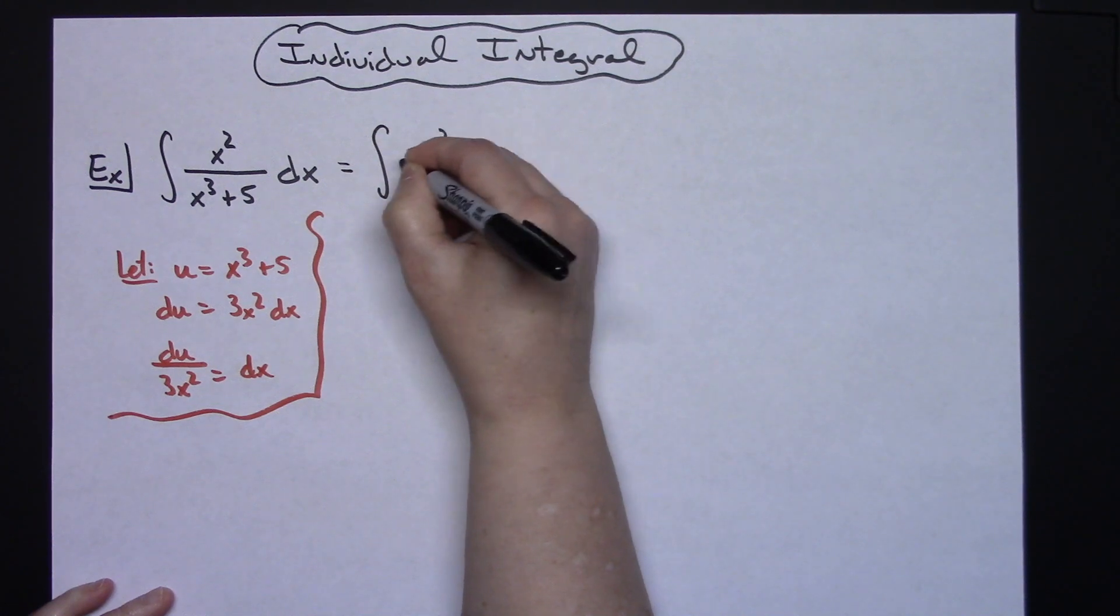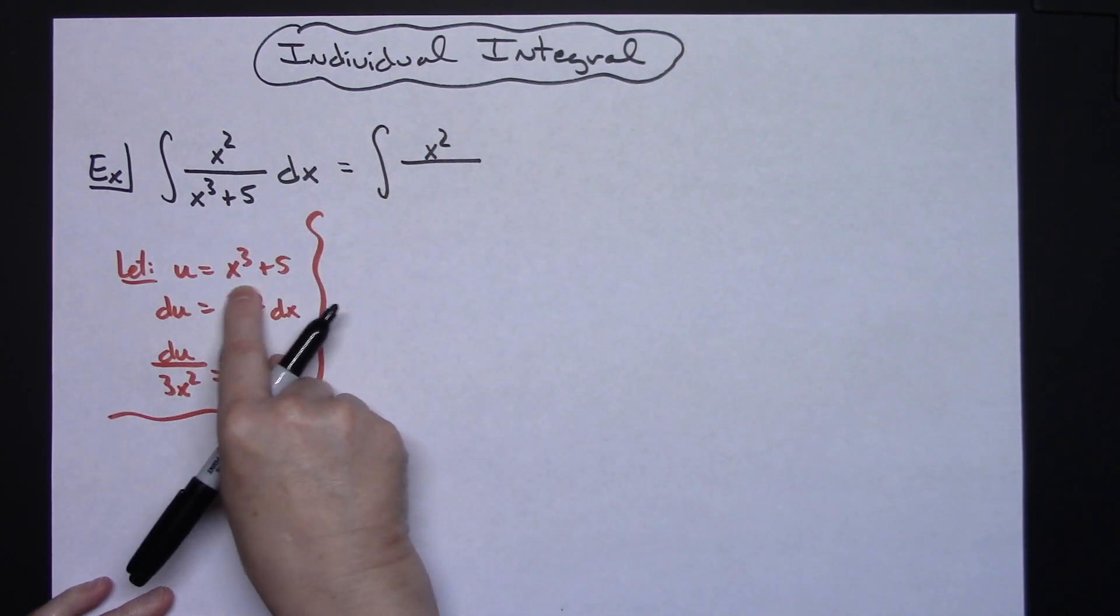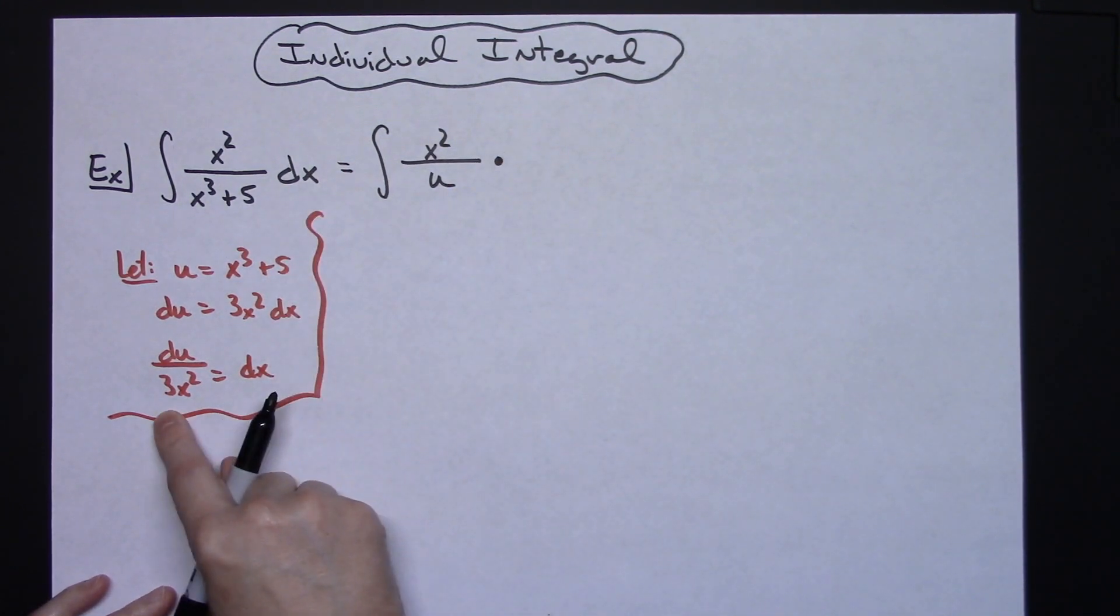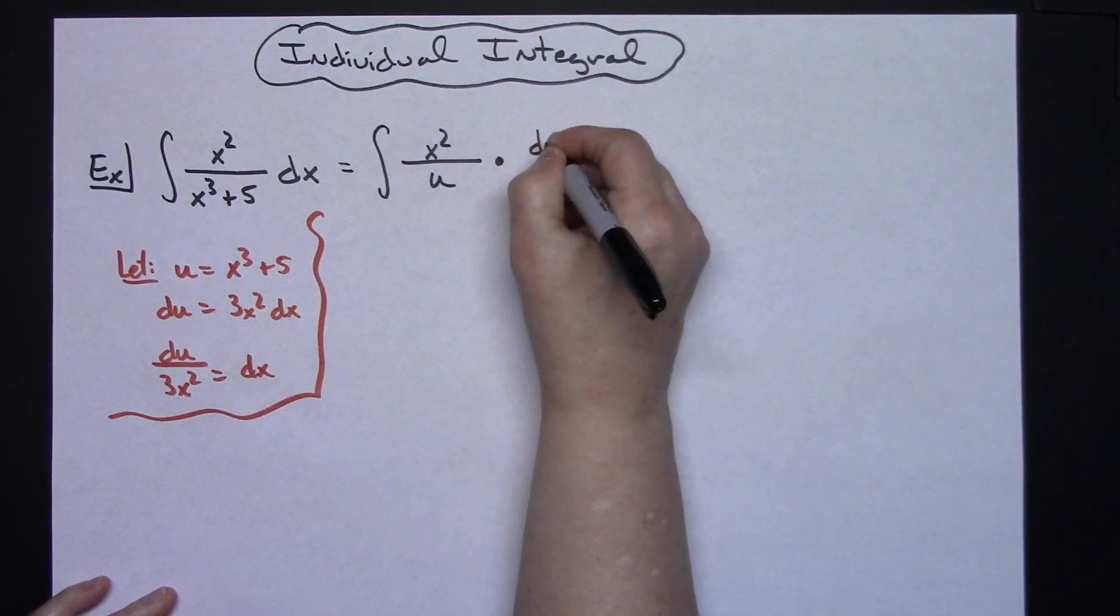My x squared is going to stay in that numerator. The x to the third plus 5 is going to be substituted for the u and my dx is going to be substituted for that du over 3x squared.